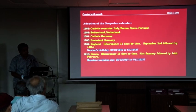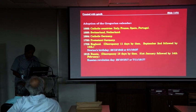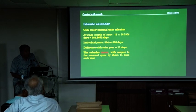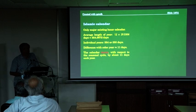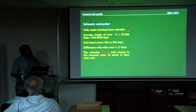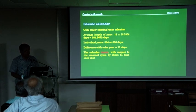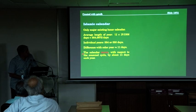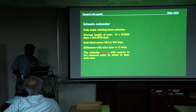There are many other countries that adopted the Gregorian calendar in between and later, but I'll move to a different calendar — the Islamic calendar. The Islamic calendar is the only major existing lunar calendar. The average length of the year is 12 synodic months, which is 12 times 29.5306 — that's 354.3672 days. Individual years are either 354 or 355 days. So the difference with the solar year is 11 days, and this calendar moves 11 days with respect to the seasonal cycle.